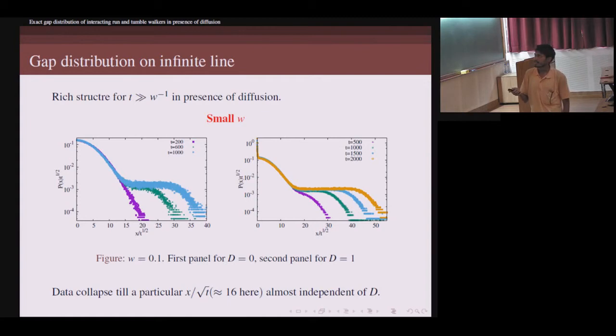You see this is the distribution of the gap between the two run-and-tumble workers for different times. If you try to rescale it in a diffusive manner, up to some certain point they fall on each other. But after that, suddenly a valley appears and it moves forward with some certain velocity. This same feature is there irrespective of diffusion. Even this is for D equal to zero, this is for some non-zero D. But we see that this segregation of the valley appears around the same value, 15 or 16.